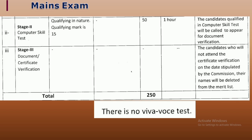Candidates who qualify the computer skill test will be called for Stage 3, which is document and certificate verification. If you are unable to produce documents on the specified date or are absent, your candidature will be cancelled. The total marks are 250 and there is no final interview.